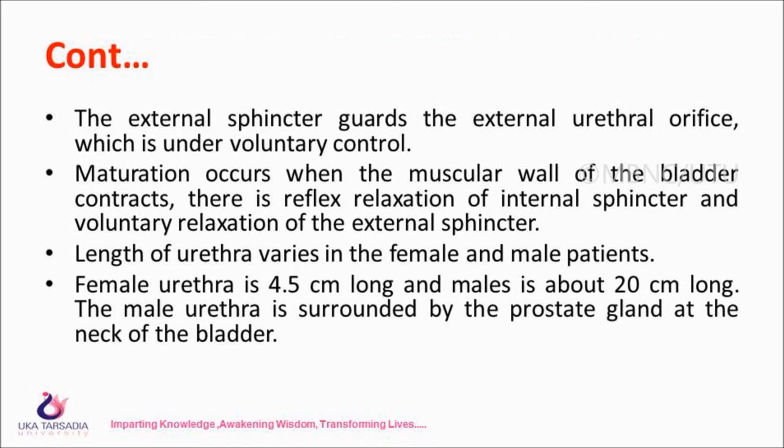The external sphincter guards the external urethral orifice and is under voluntary control. Micturition occurs when the muscular wall of the bladder contracts, with reflex relaxation of the internal sphincter and voluntary relaxation of the external sphincter. The length of the urethra varies between female and male patients — female urethra is 4.5 cm long and male is about 20 cm long. The male urethra is surrounded by the prostate gland at the neck of the bladder.